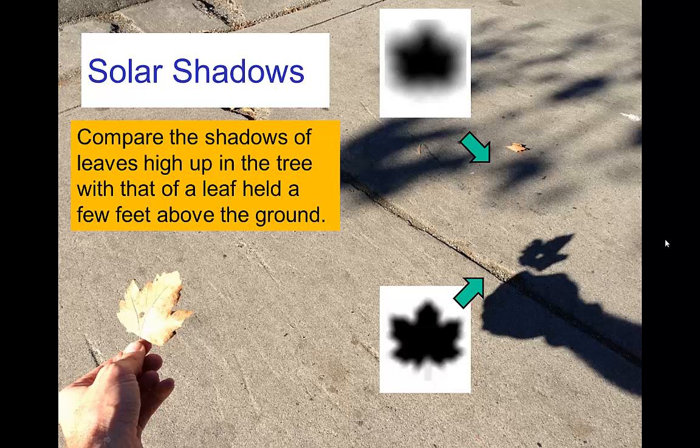The sun also produces shadows that have penumbra. When we hold a leaf close to the ground, the shadow is fairly sharp. But when the leaf is high up in the tree, so it's farther away, then the shadows become blurry, and the higher up in the tree, the blurrier the shadows.